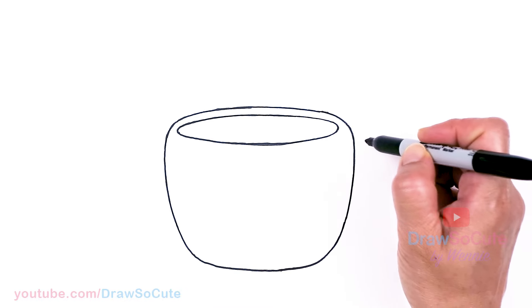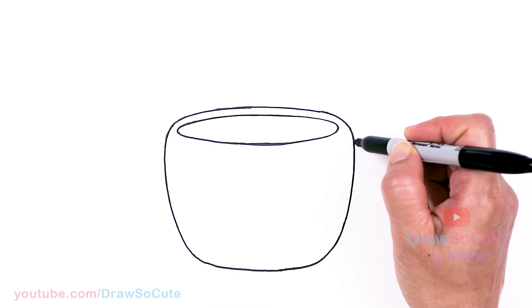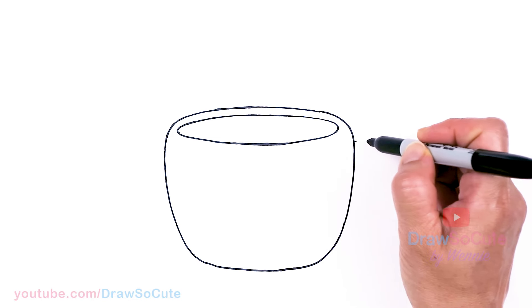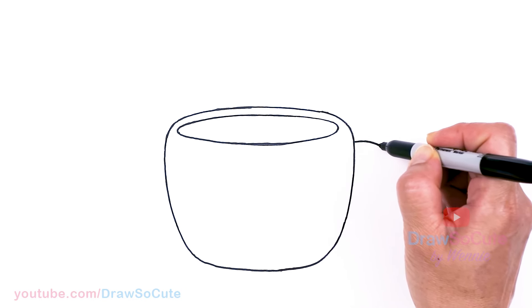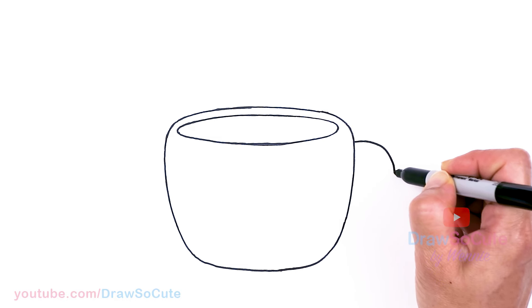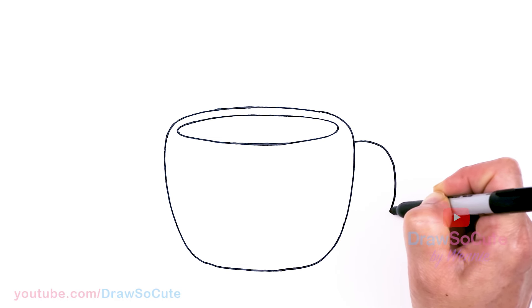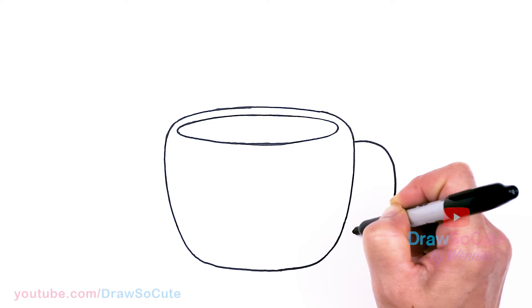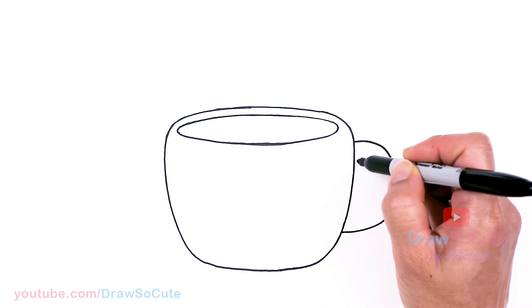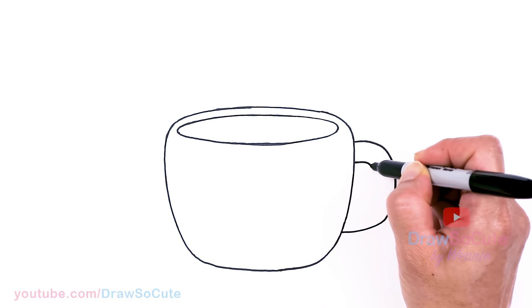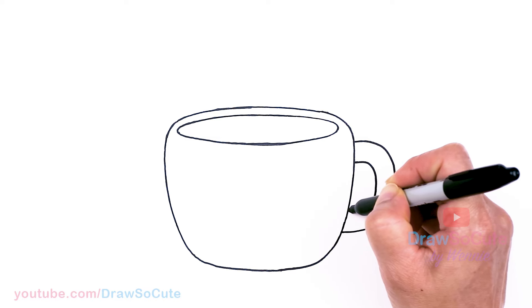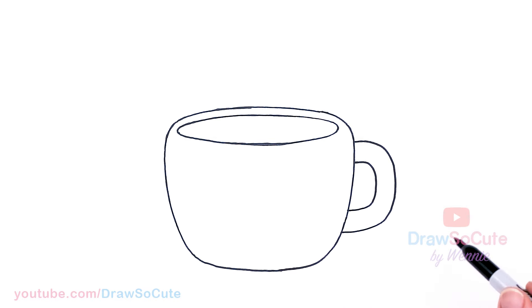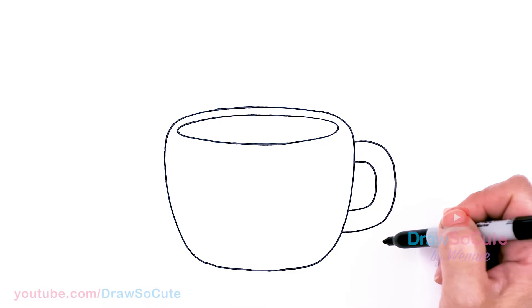Then from there let's add a handle. About right here I'm going to go ahead and let's see here. Let's bring this down and in about right there. And then we need to thicken it up. So just follow whatever you drew to create your handle. There. So we have a nice cup.